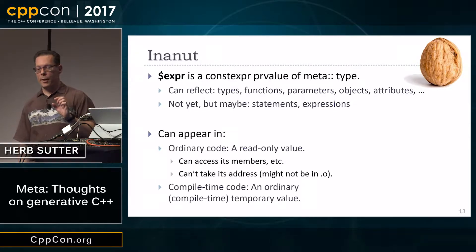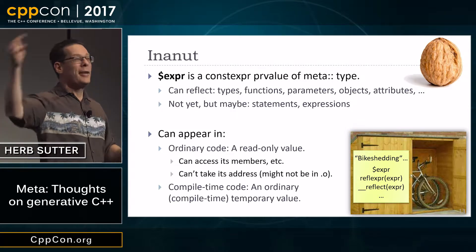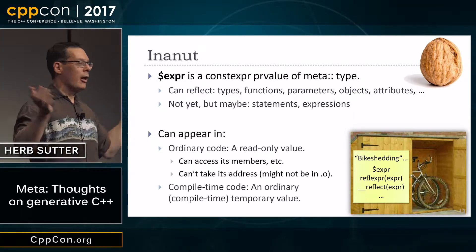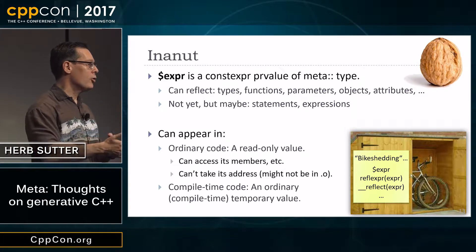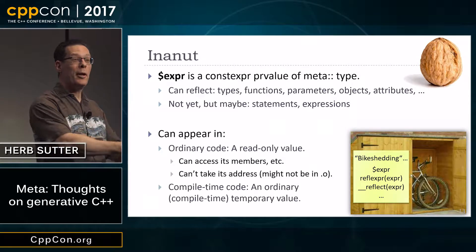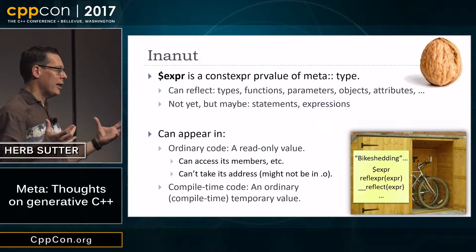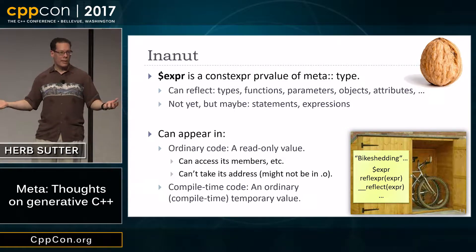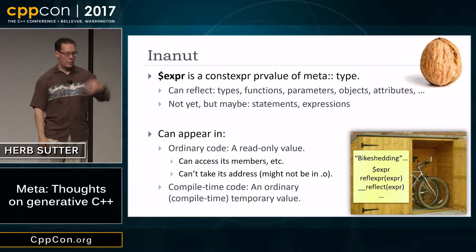That's the nutshell summary. I'm going to show the bike-shedding thing only once but assume it appears on every slide for the rest of the talk: syntax may change. It may be prefix dollar expression; there are concerns about that including interaction with existing code generation tools that already stake a claim on the dollar symbol. We may want reflexpr with angle brackets or round brackets, or some underbars — who knows. As long as I can spell it some reasonable way, I'm a happy camper. For today I'll use prefix dollar.